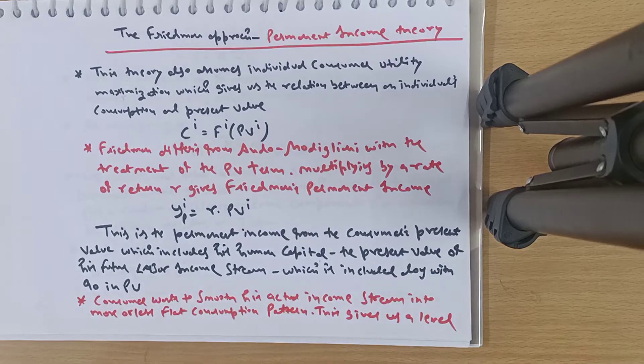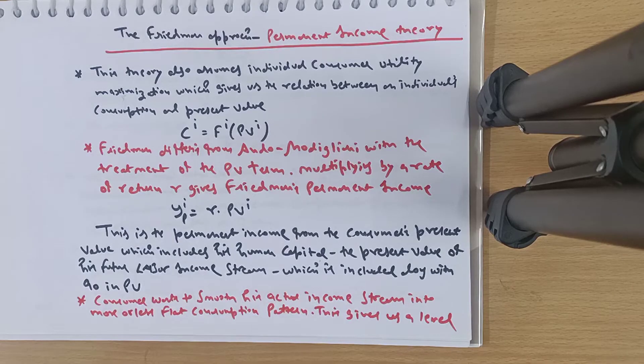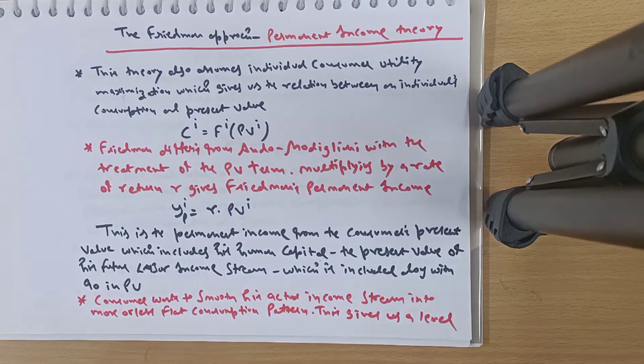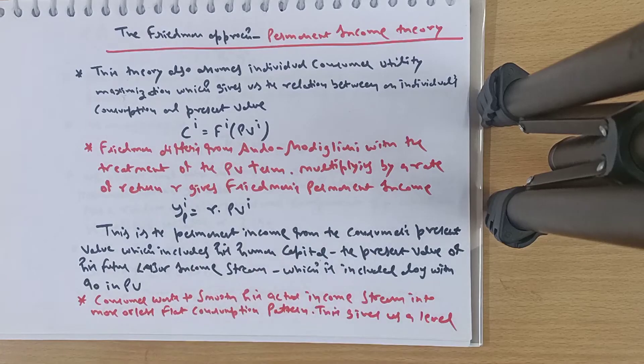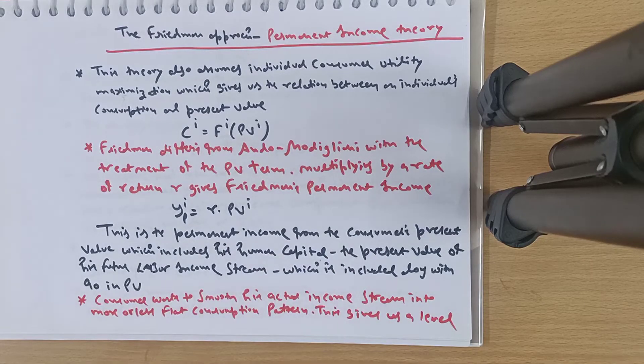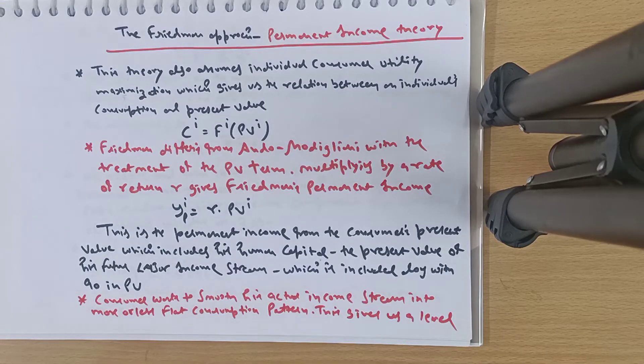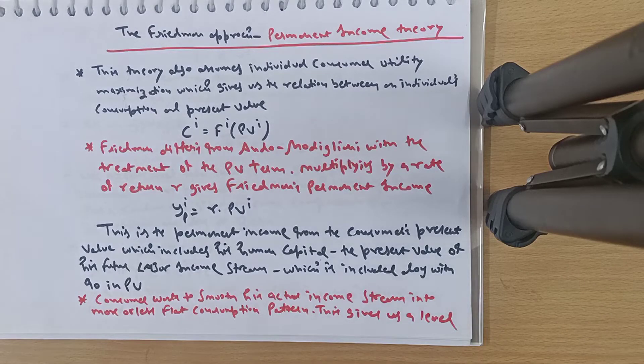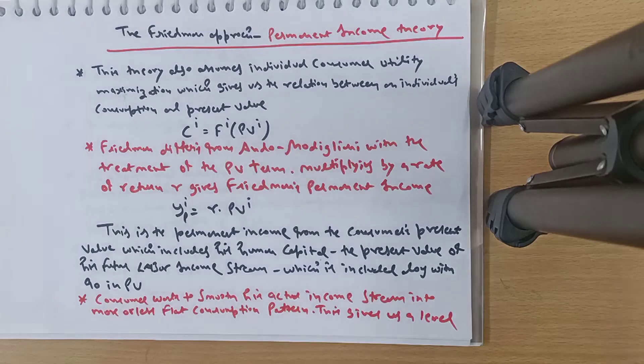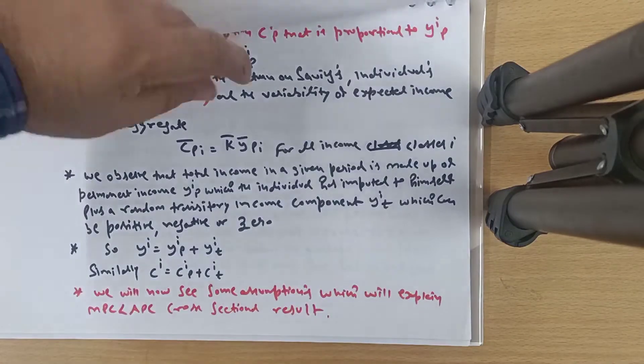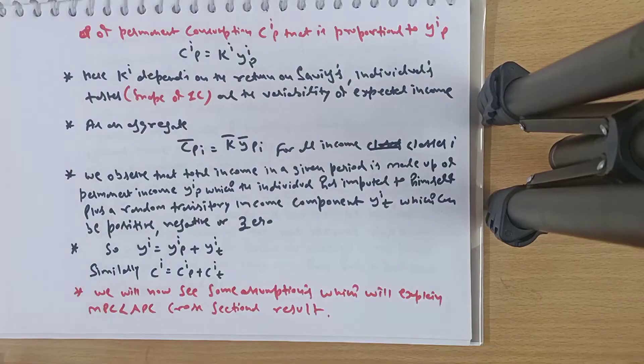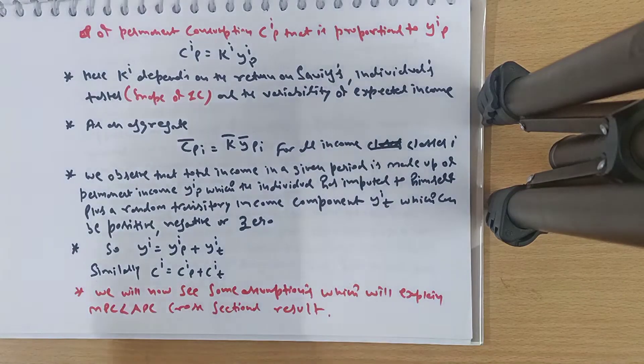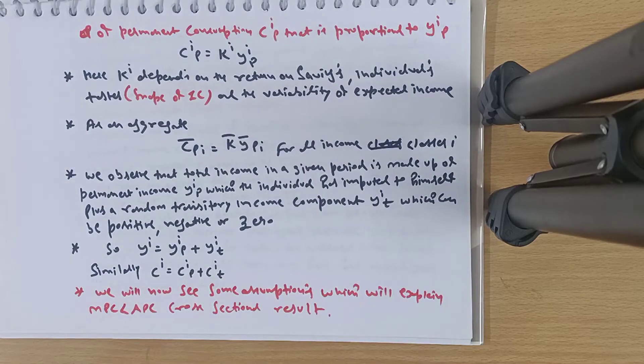This is the permanent income from the consumer's present value, which includes his human capital, the present value of his future labor income stream, along with assets. All of this is included in permanent income. The consumer wants to smooth his actual income stream into a more or less flat consumption pattern. Obviously, whatever lifetime remains, the consumer wants his consumption to remain smooth, with an average consumption maintained throughout lifetime. This gives us a level of permanent consumption.